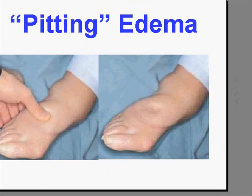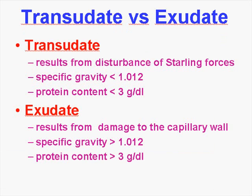Let's look at pitting edema, because you're going to be pinching those feet every day in your heart failure patients. Let's also look at the concept of transudate versus exudate. A transudate is an edema which is almost purely water — it has a low specific gravity, lower than 1.02, and a low protein content of only 3 grams per dL, well below the serum level. An exudate is usually edema due to damage of the capillary wall, with a higher specific gravity and a protein content which may approach or even exceed that of normal serum.